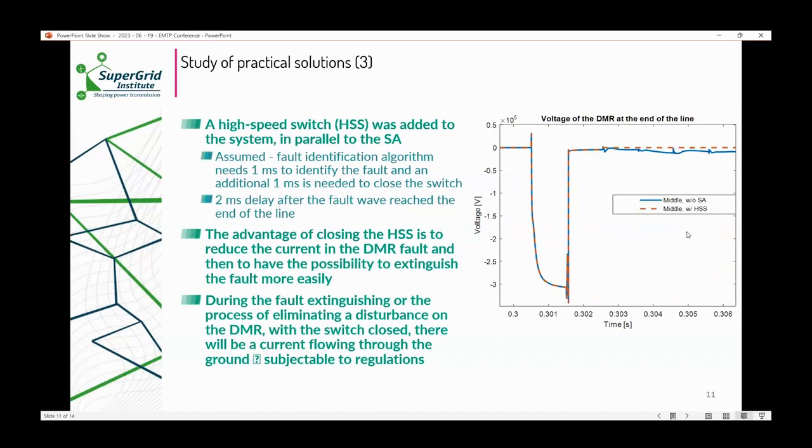We added it in parallel to have an option to extinguish the fault. Our assumption in modeling this switch was the fault identification algorithm needs one millisecond to identify the fault, an additional one millisecond to close the switch. So it means the wave arrives in the station, and after two milliseconds, the high-speed switch is closed. On the right-hand side, you can see that two milliseconds is not fast enough. This case was simulated without the surge arrestor just to show the influence and ability of a high-speed switch. It shows the high-speed switch cannot prevent the flashover, but when it closes, the voltage goes to zero. So it can help us extinguish the fault. During the fault extinguishing or the process of eliminating a disturbance of the DMR, with the switch closed, there will be a current flowing to the ground. This is subjectable to regulations depending on the country and region.